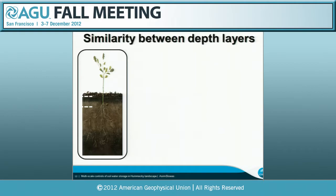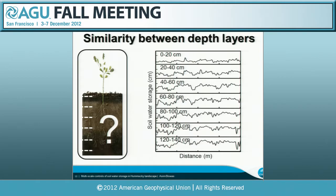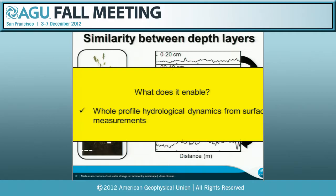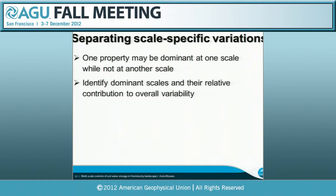Most soil water measurements are done at the surface level. Can I correlate the surface to deeper levels? As an agricultural scientist, we want to know what is going on for the whole soil profile. I measured at different layers all the way to 140 centimeters at each 20-centimeter interval, then correlated how similar they are from the surface to the deeper layers at different scales and different times of year. Based on this relationship, I was able to infer whole-profile hydrological dynamics from surface measurements, since surface measurements are easily available.